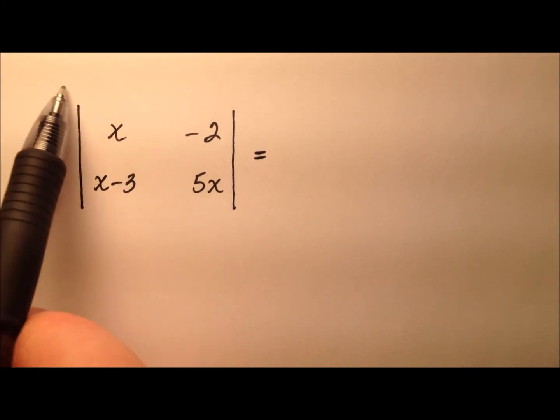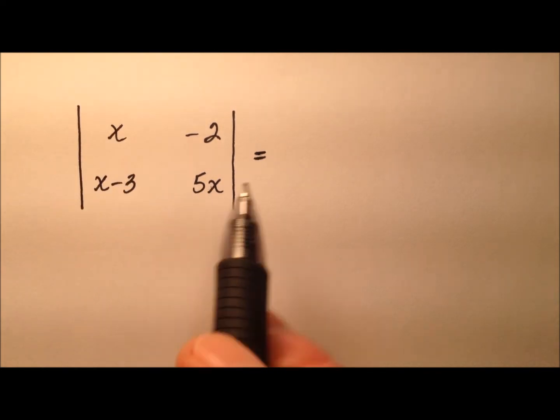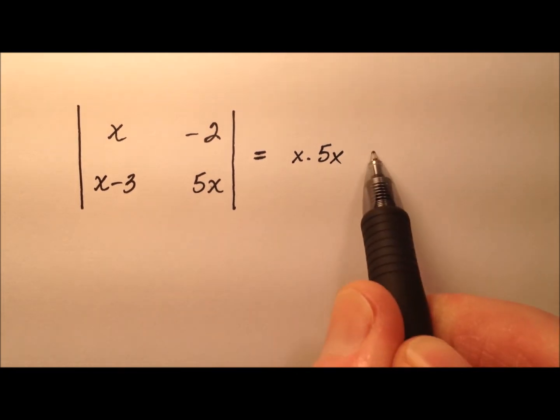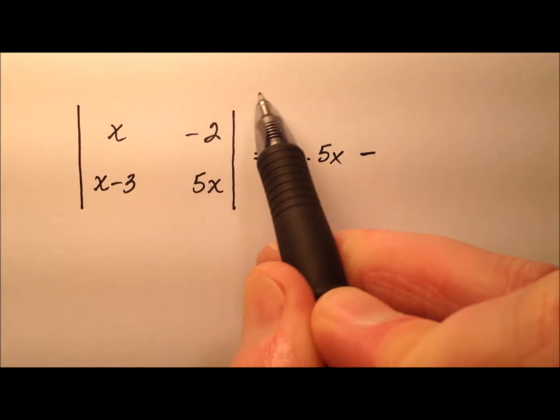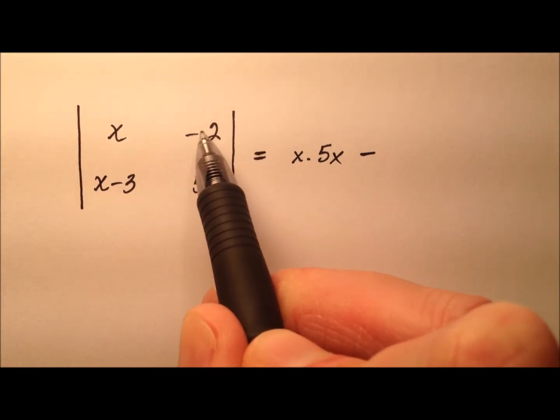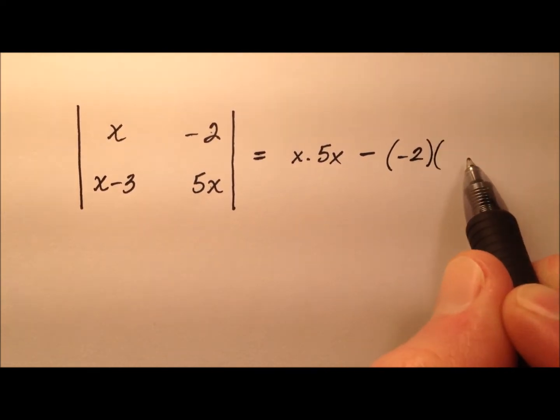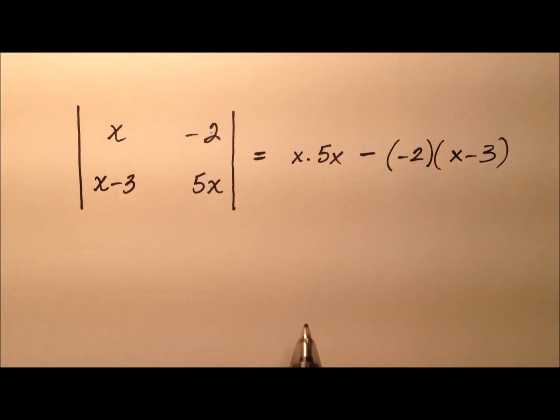We're going to come down this main diagonal and multiply x times 5x. From that we'll subtract the minor diagonal, this negative 2 times x minus 3.